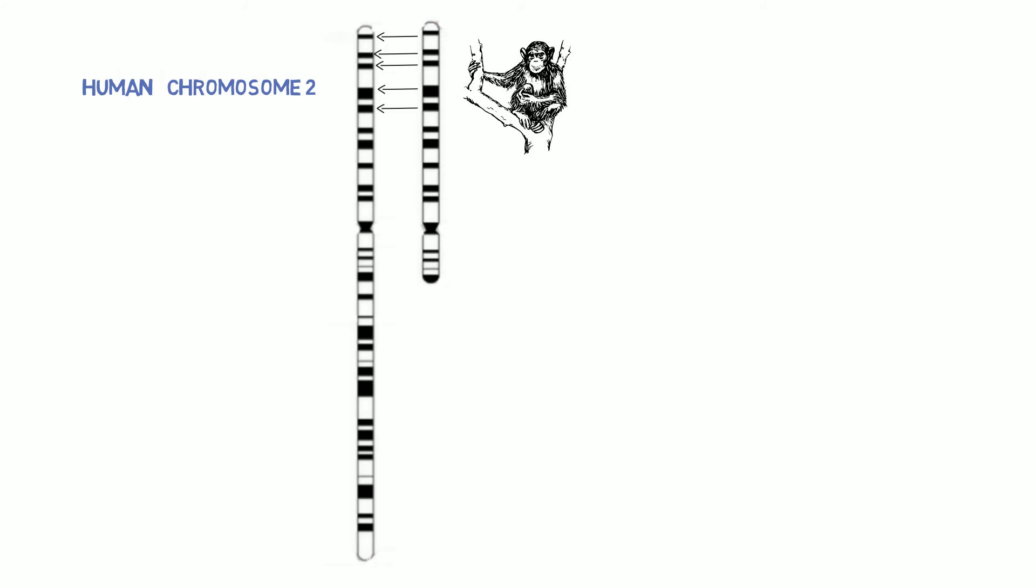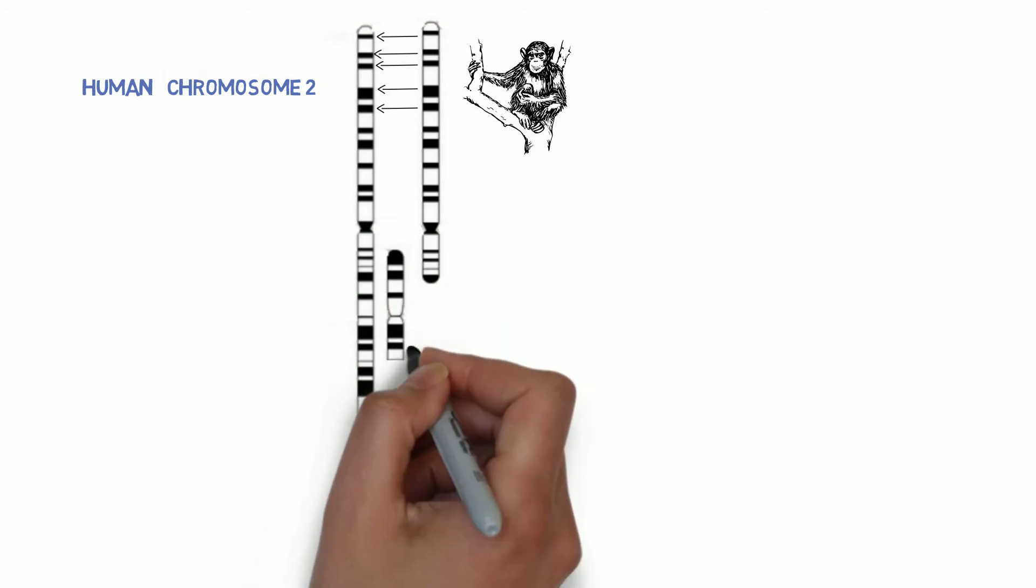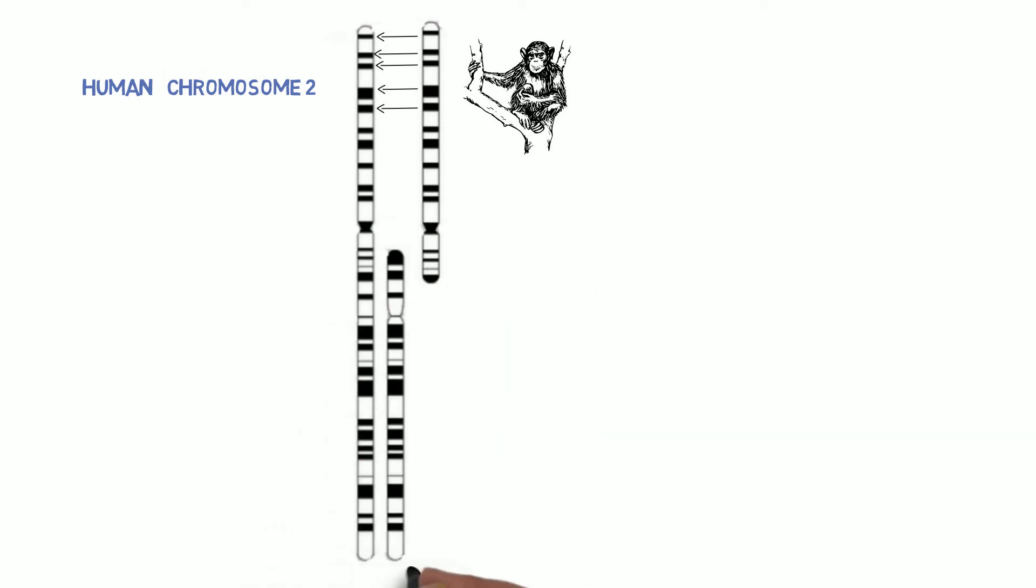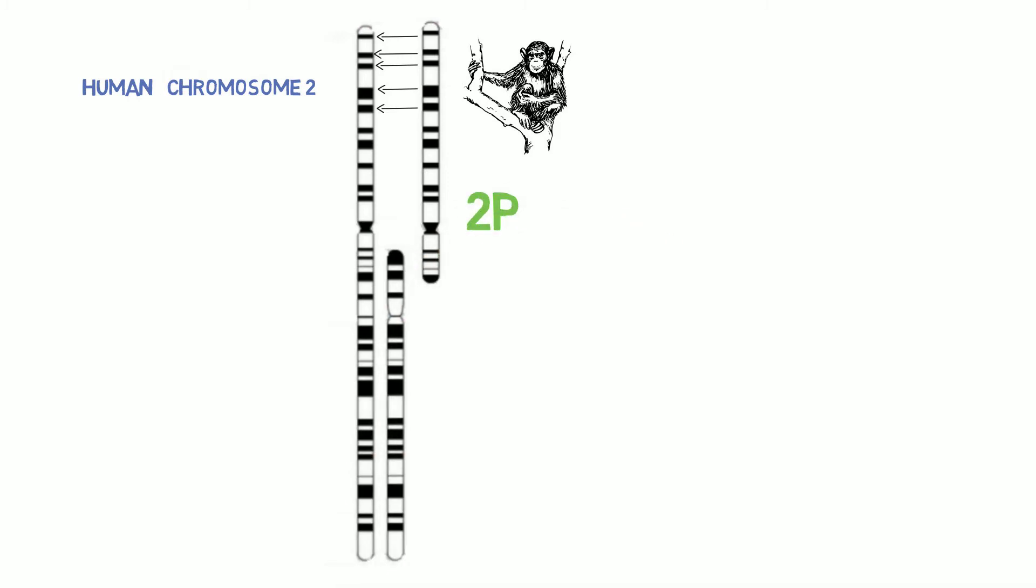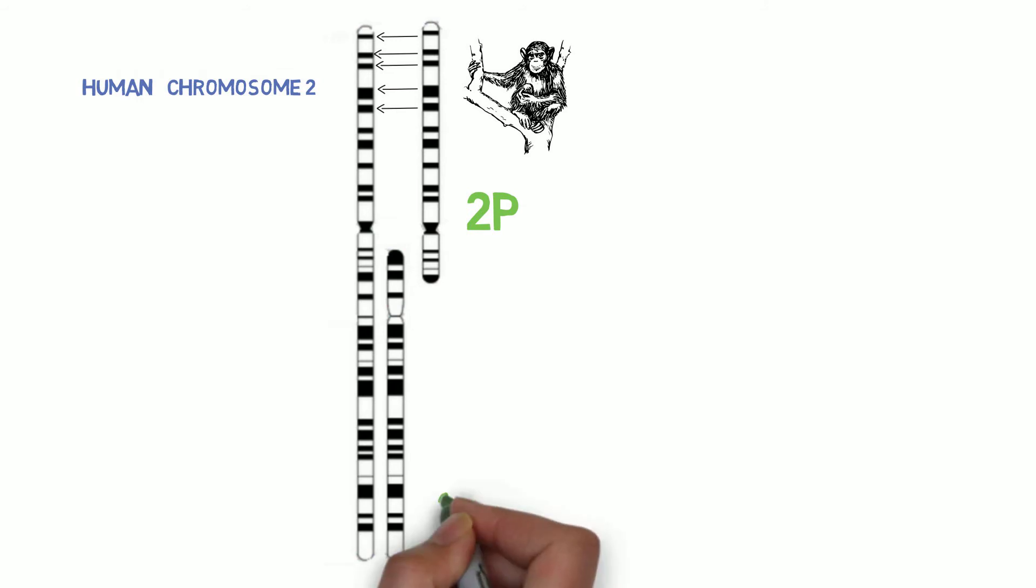But there's one important difference. The banding pattern, corresponding to our chromosome two, is found not in one comparable chromosome. It's found in two smaller chromosomes, each about half the length of our chromosome number two. They have a chromosome 2P, and they have a chromosome 2Q.